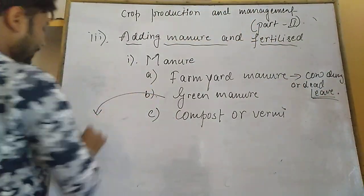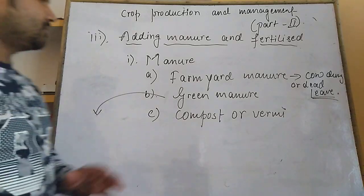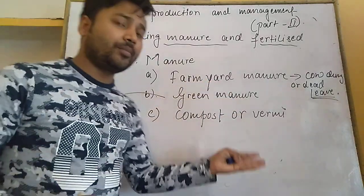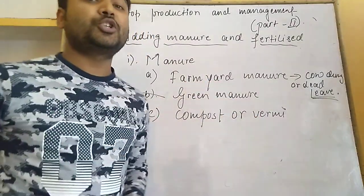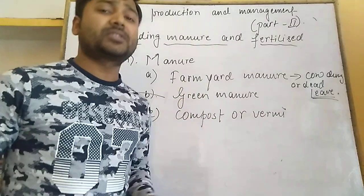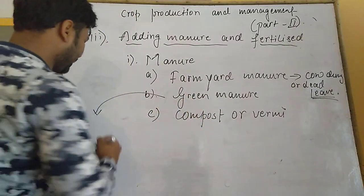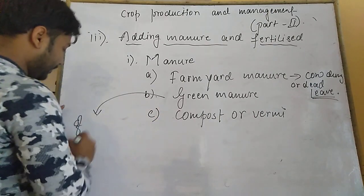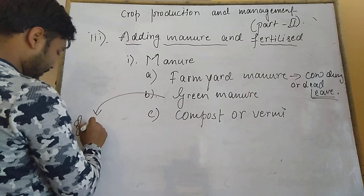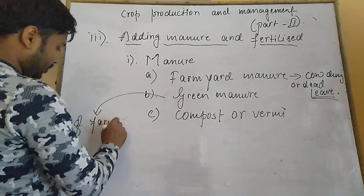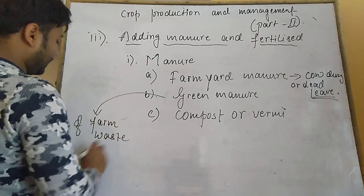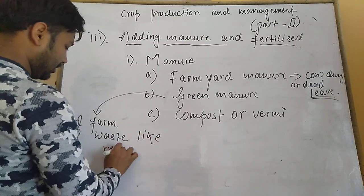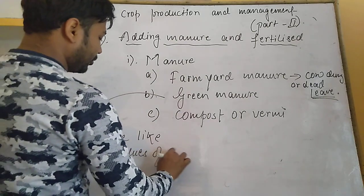These all three types are correlated to each other because they are all made by the decomposition of biodegradable substances. Farmyard manure is made by the decomposition of cow dung and dead leaves. Green manure is made by the decomposition of farm waste, like residues of crops.